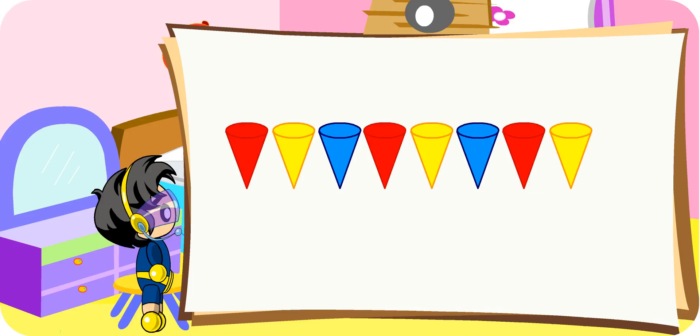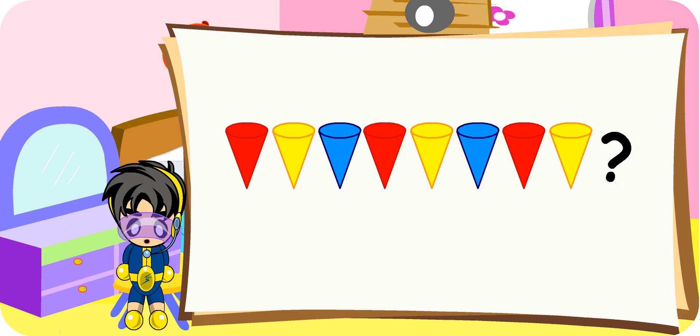This is an example of a pattern made using objects with change in color. What color do you think is the next cone? It should be a blue cone. Good.